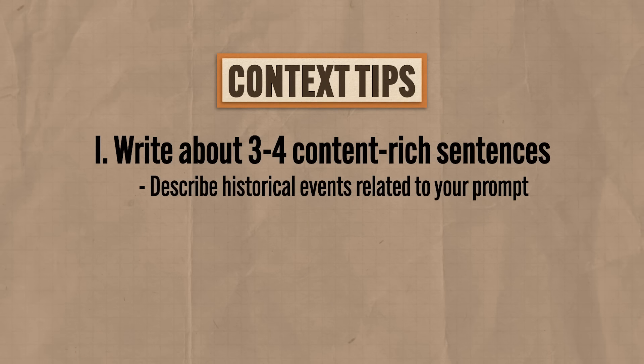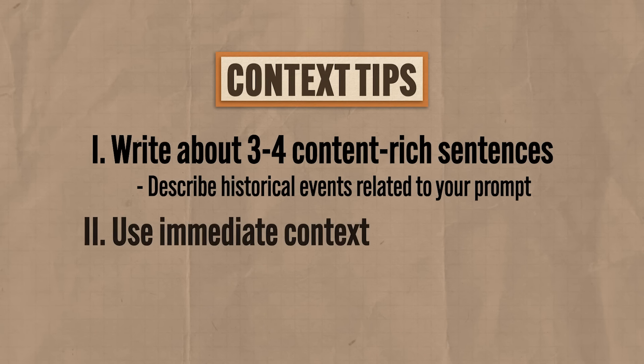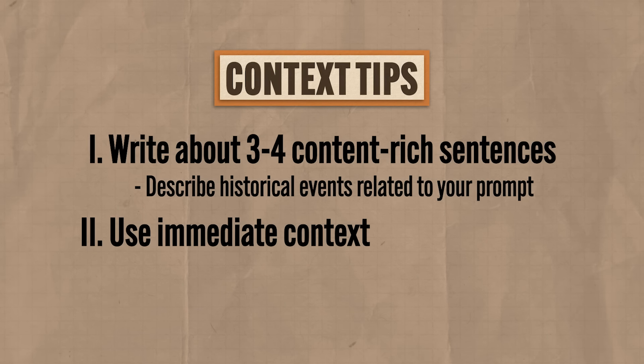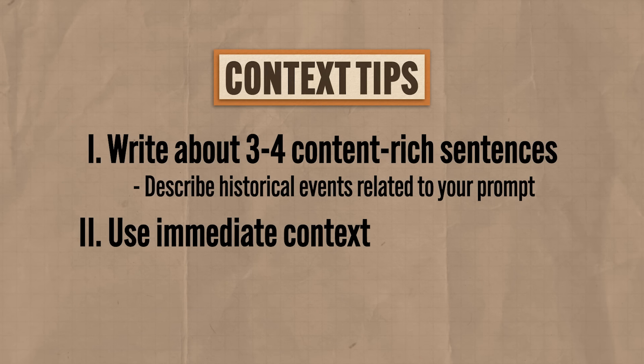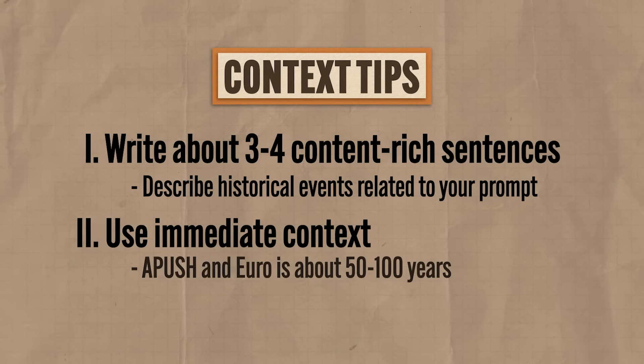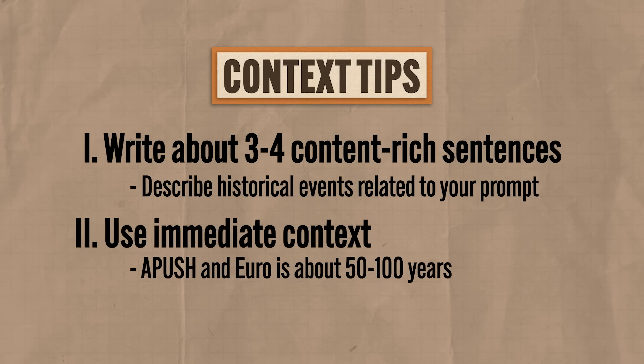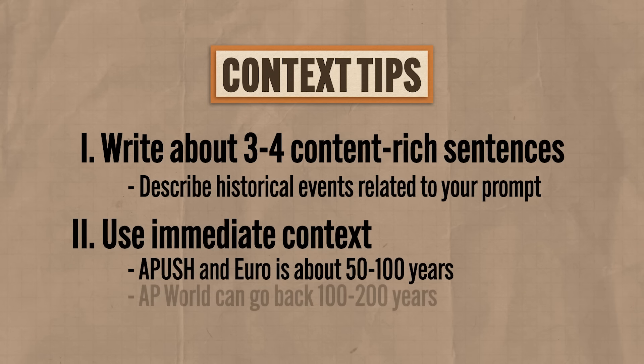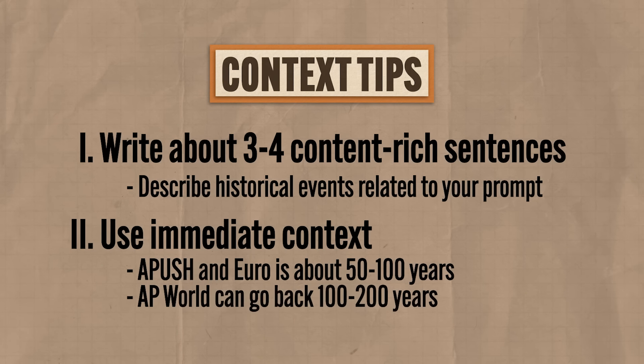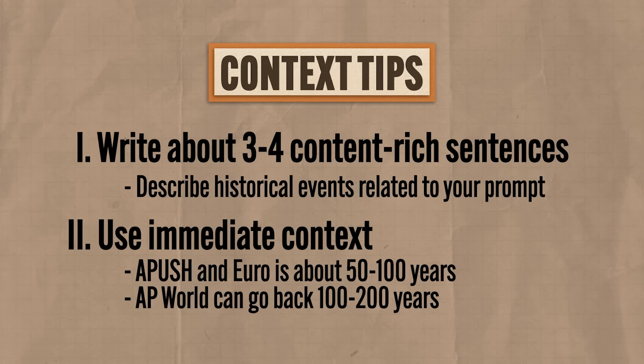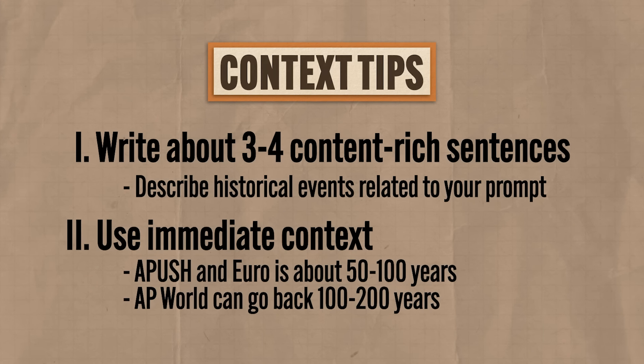Quick tip: how far should you go back for your contextualization? The general rule of thumb for APUSH and AP Euro is about 50 to 100 years back, closer to 50 than 100. For AP World, you might go 100 to 200 years back — but those are just general guidelines depending on the prompt. My best advice is to keep your contextualization as close to your time period as you can.